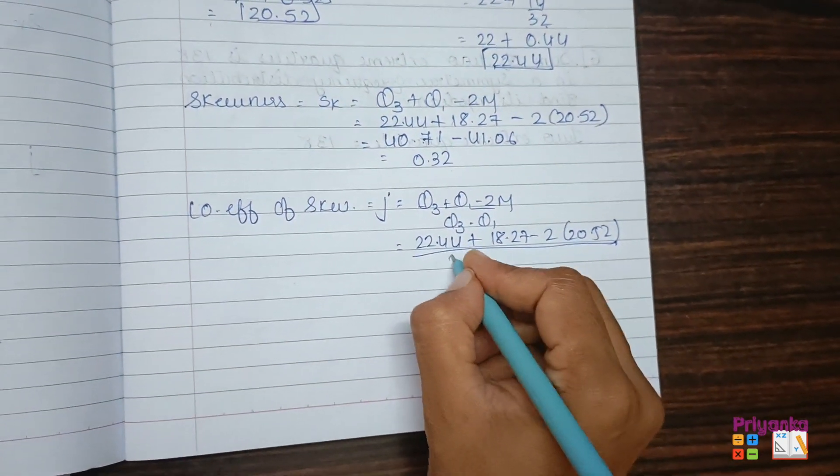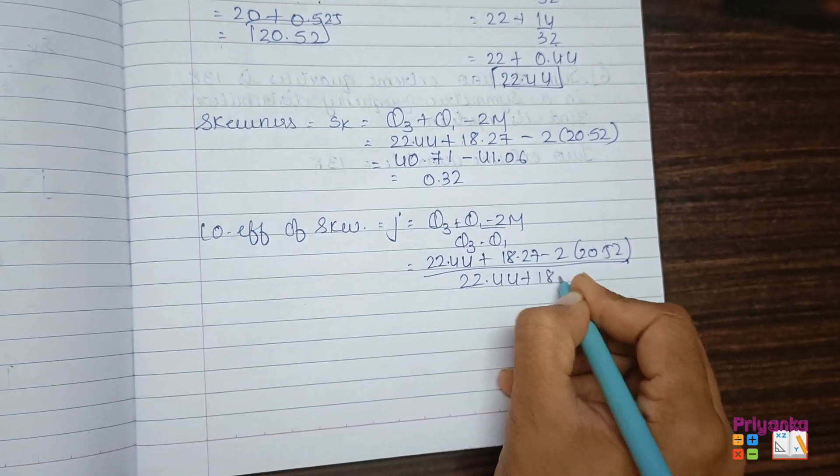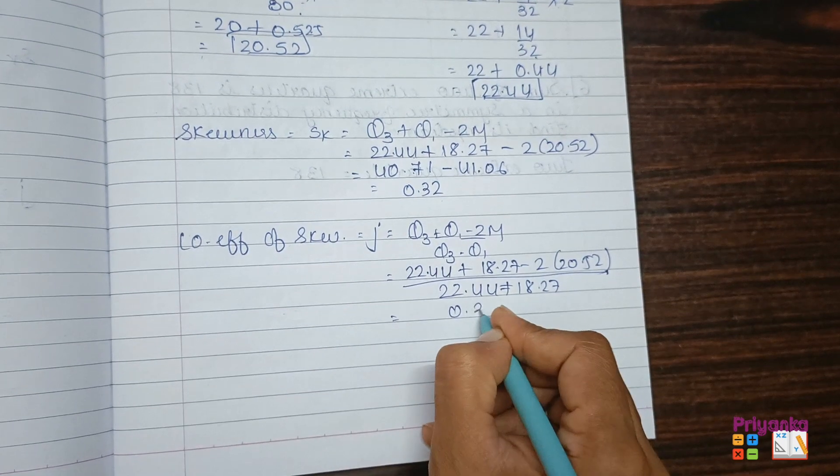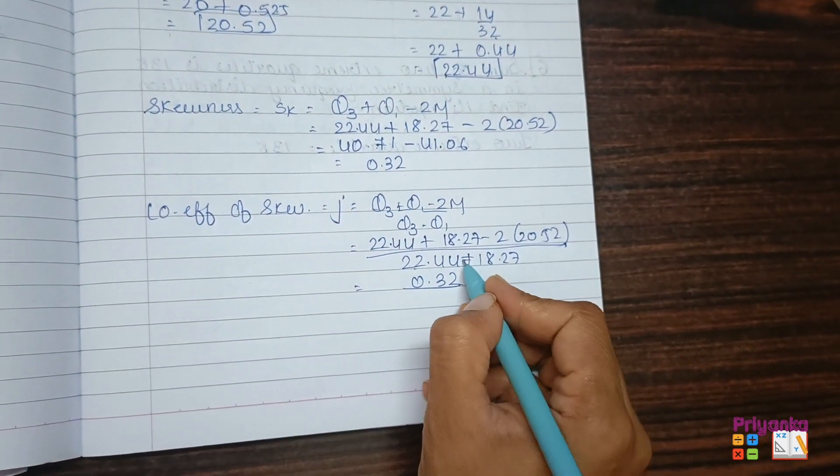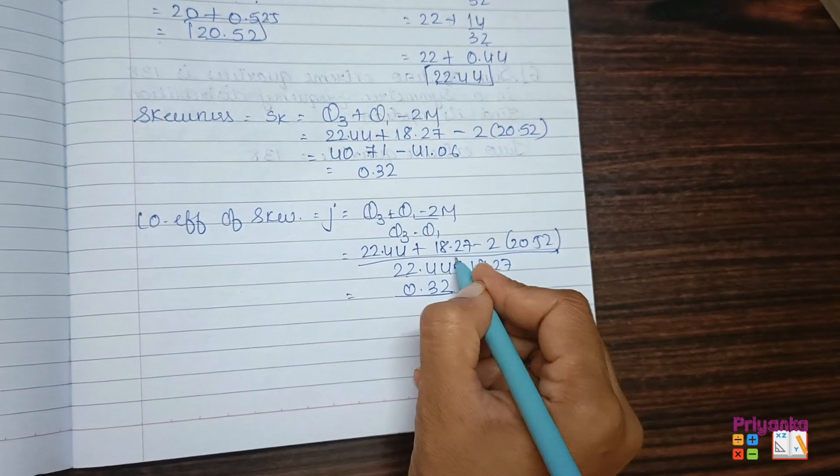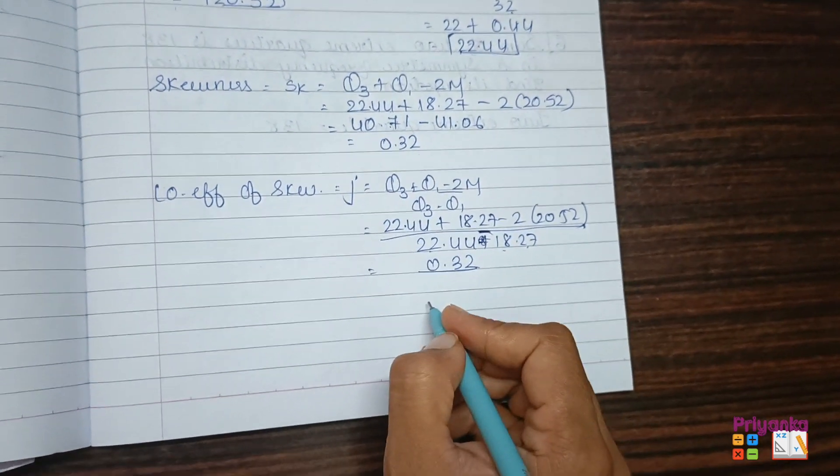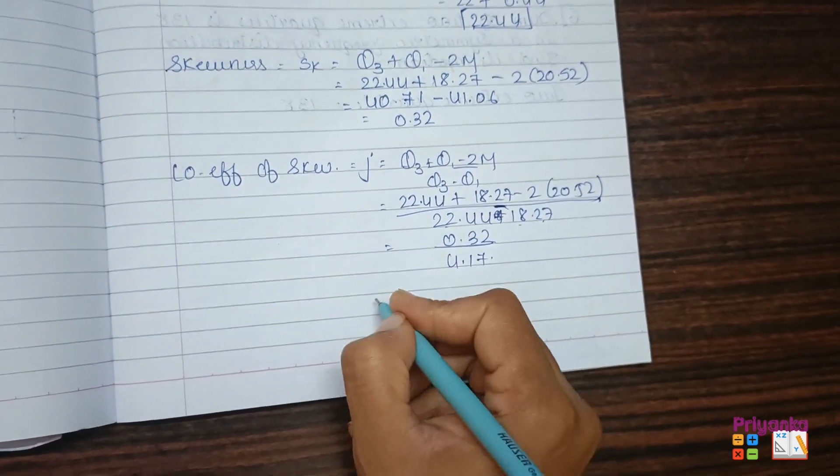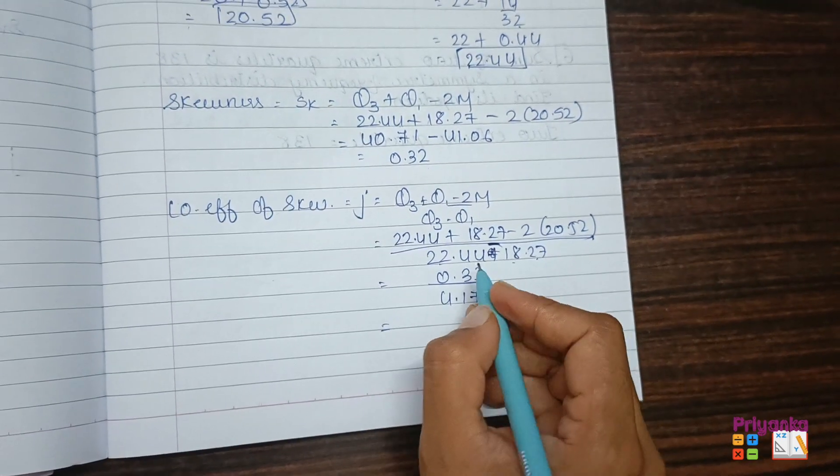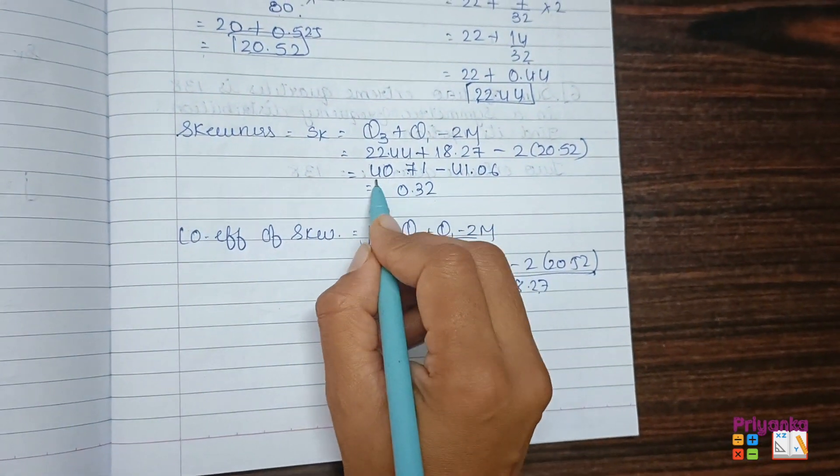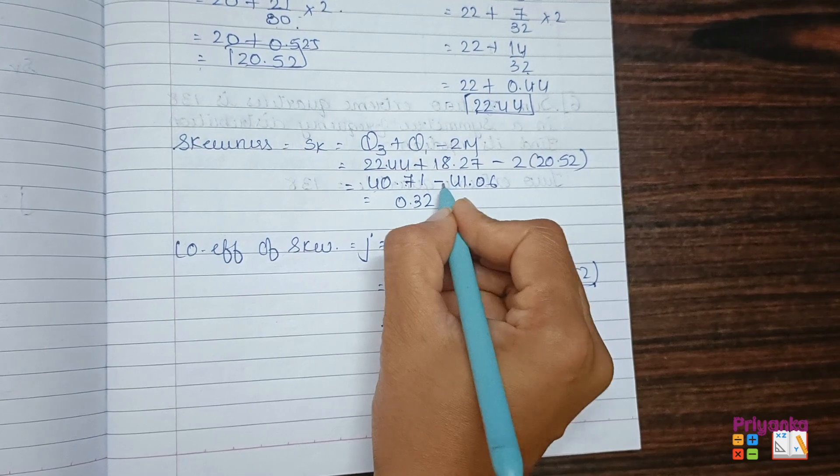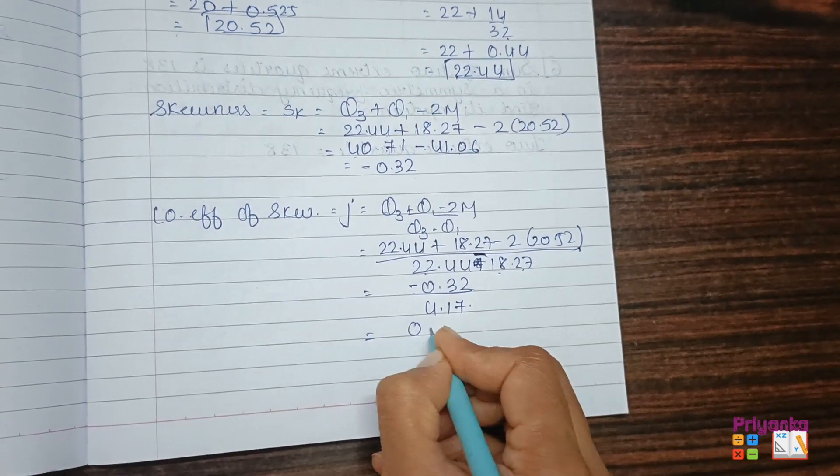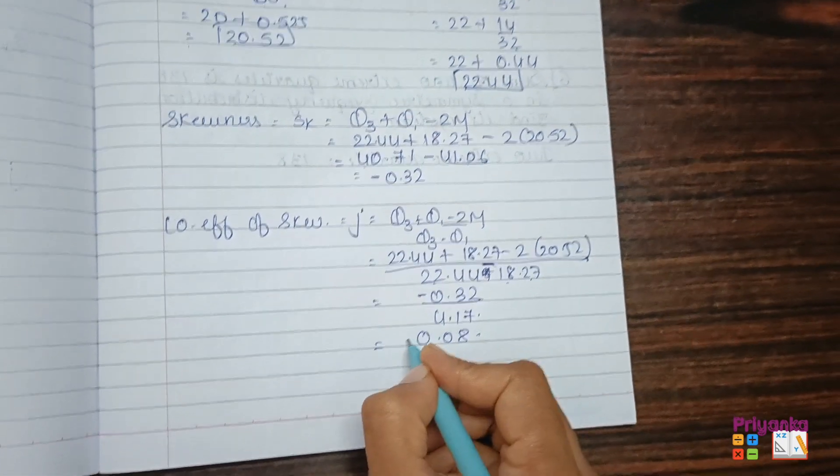Next, again the same has been written: Q3 value 22.44, Q1 18.27, minus the median 20.52. Divide by Q3 22.44 plus Q1 18.27. So out of this calculation, I'm taking directly from here. And 22.44 minus 18.27, you will get 4.17. And out of this calculation, here you can check with the answer. This is a bigger number, right? So then this answer will be minus. Now you will get the answer in division.